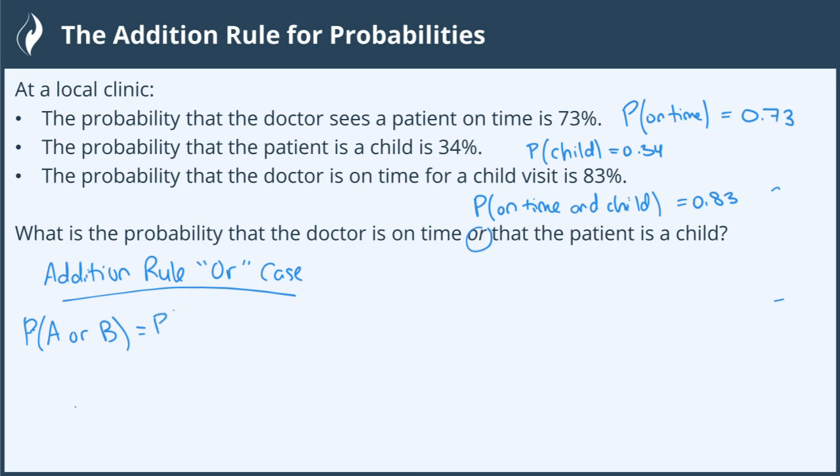So the formula, and you want to write this on your formula sheet, is the probability of A plus the probability of B minus the probability of the intersection A and B. Okay, so this is your general rule for probability. And then it gets a little simpler if we have what's called mutually exclusive events, but that's not the case here. We're going to talk about the general rule.